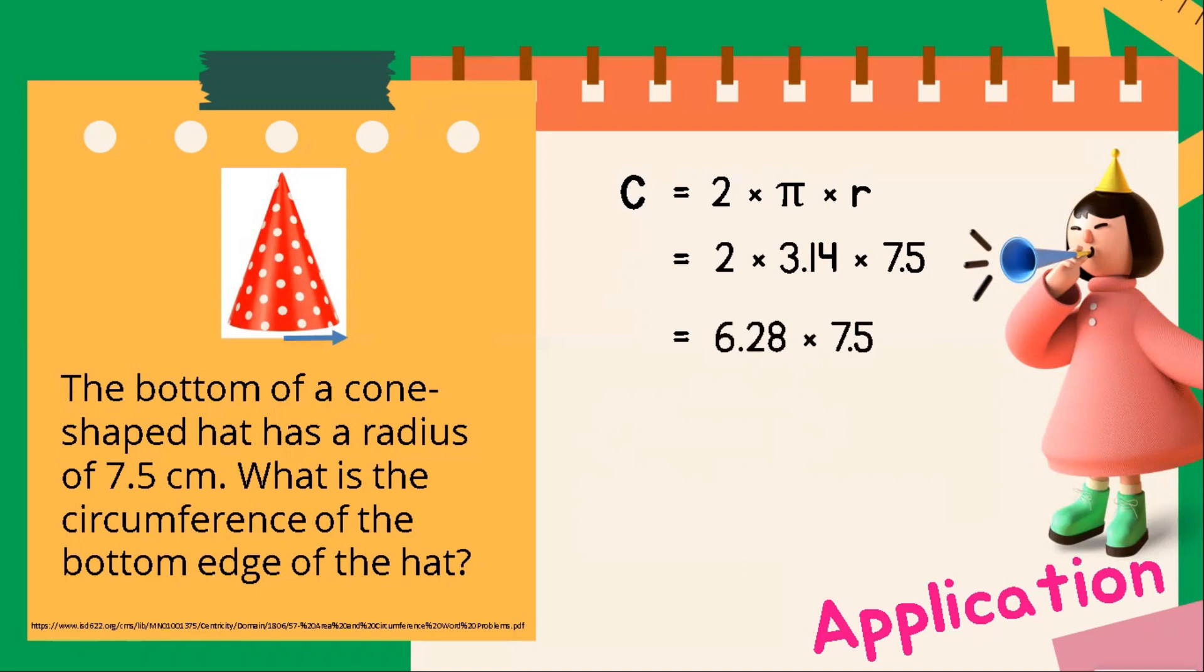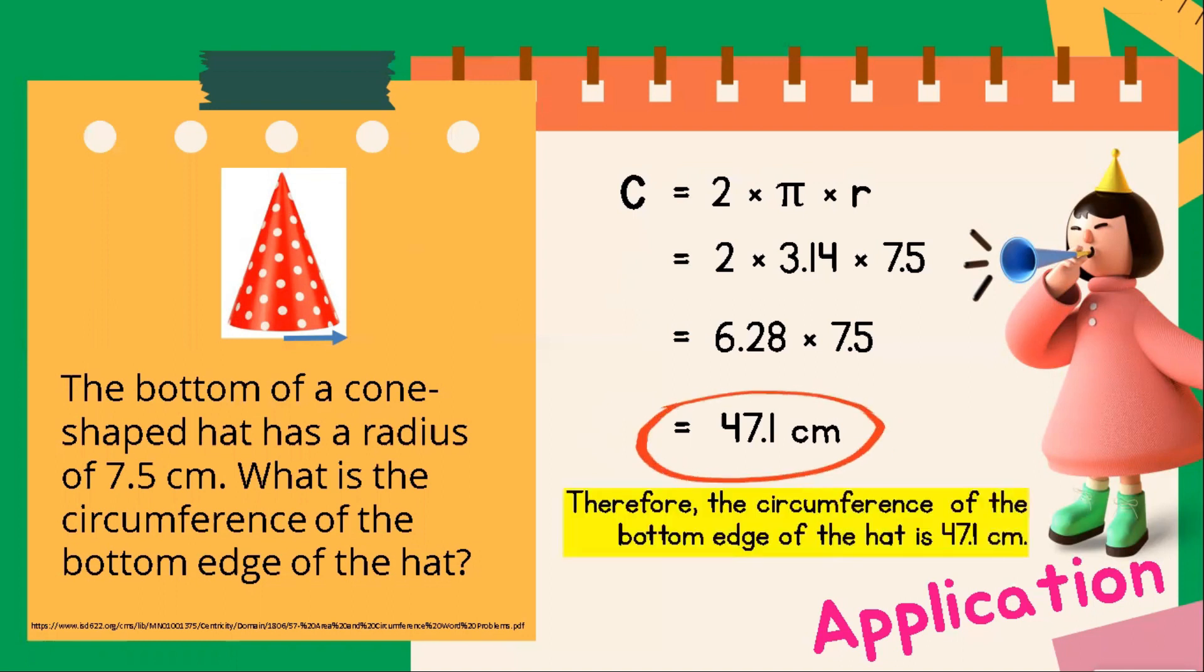Next, we have 6.28 times 7.5. The result is 47.1 centimeters. Therefore, the circumference of the bottom edge of the hat is 47.1 centimeters.